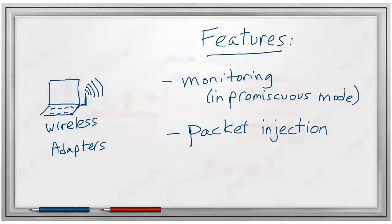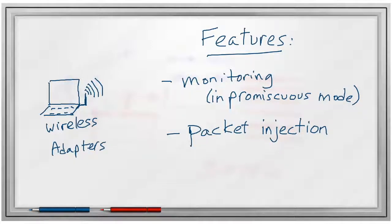Deauthentication attacks allow you to kick users out of the wireless network — creating a denial of service condition, or kicking them out so they join a rogue access point. We will cover all these types of attacks later in this course.